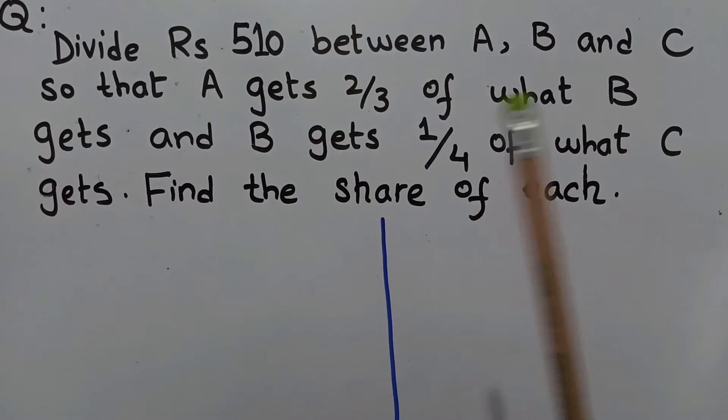Divide Rs 510 between A, B and C so that A gets 2/3 of what B gets and B gets 1/4 of what C gets. Find the share of each.